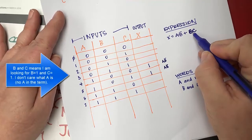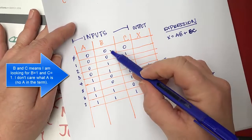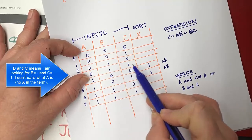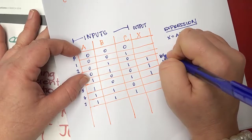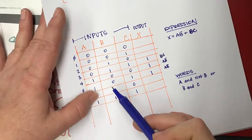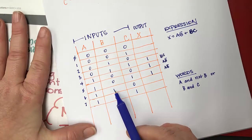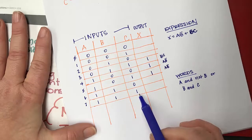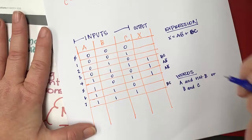Now I'm looking for B AND C — I don't care what A is. B AND C means both B and C are one. Here's where B is one and C is one — I put a one there. Then I look for another case of B AND C: ignore A, find where B is one and C is one — that row also gets a one.